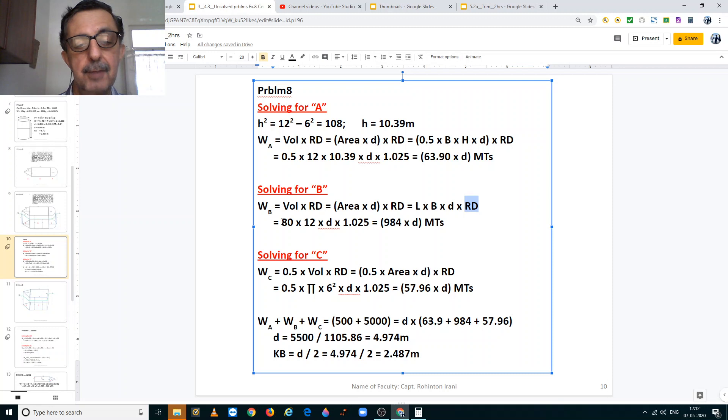Thus we, when we substitute the values, we have length is 80, breadth is 12, draft is not known, the relative density being salt water is 1.025. Thus the displacement of the B section works out to 984 times the draft metric tons.